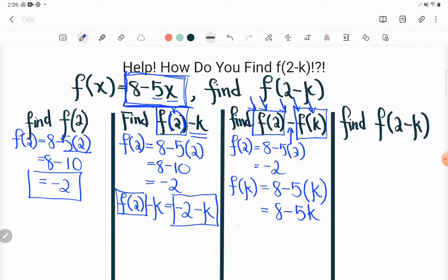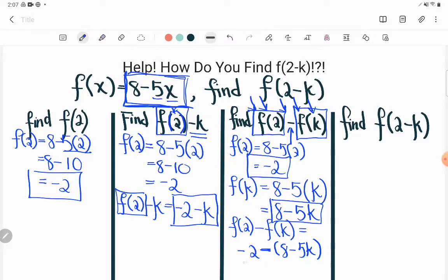That being said though, I still haven't found f of 2 minus f of k. So let's do that. That would be if I took my f of 2 and we figured out what that was, that was negative 2. And I subtracted my f of k. Now I want to subtract the whole thing, so I'll use parentheses around it. And there would be a little bit of simplification to do there. Let's pass out the negative. And then let's combine any like terms. Negative 2 and negative 8 are like terms. They'll combine to negative 10. And it's that plus 5k.